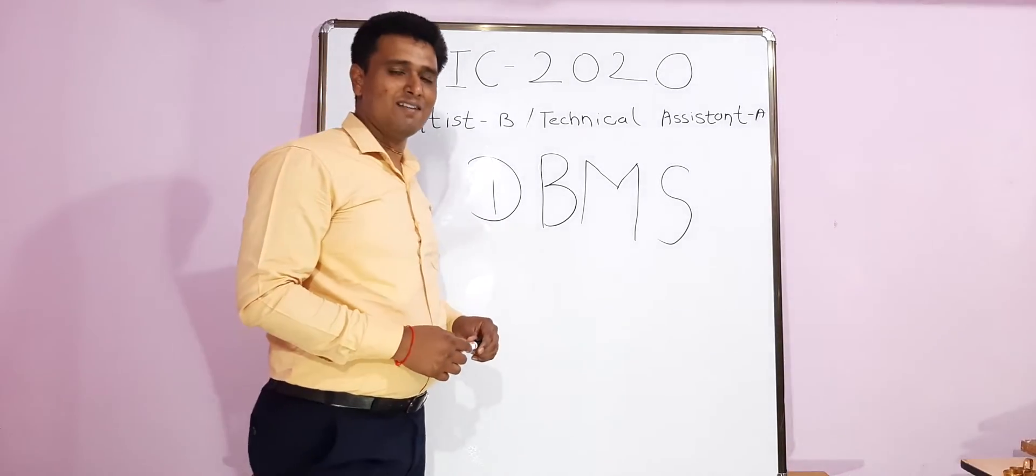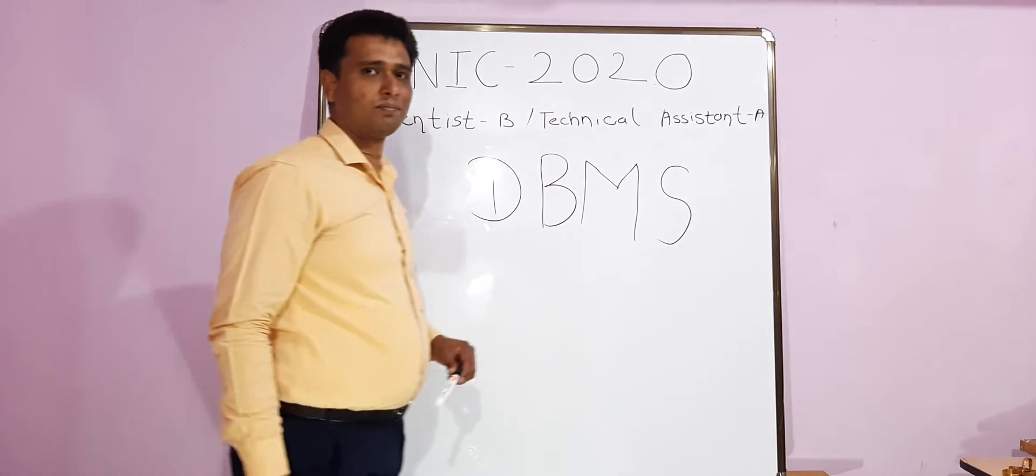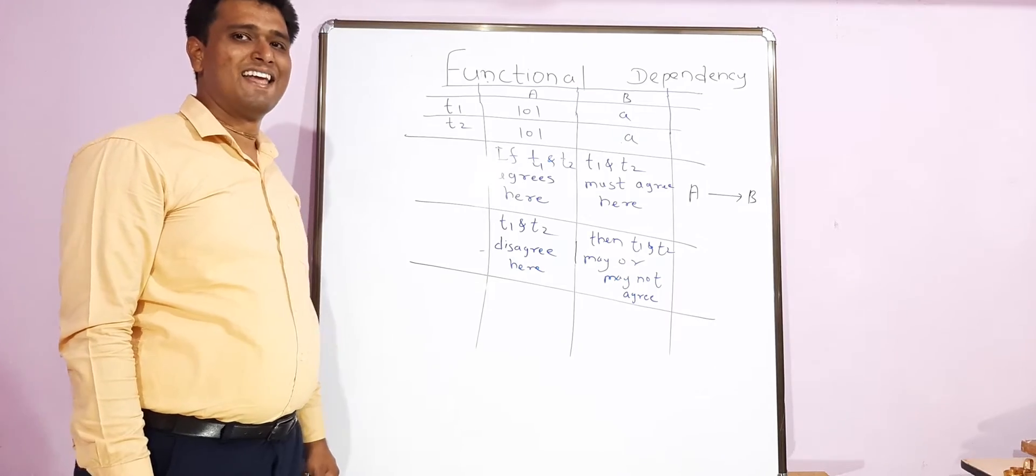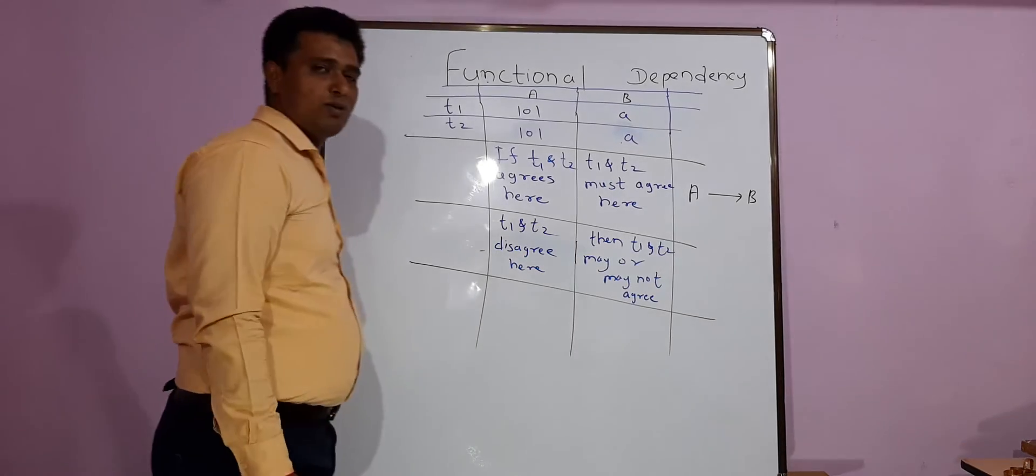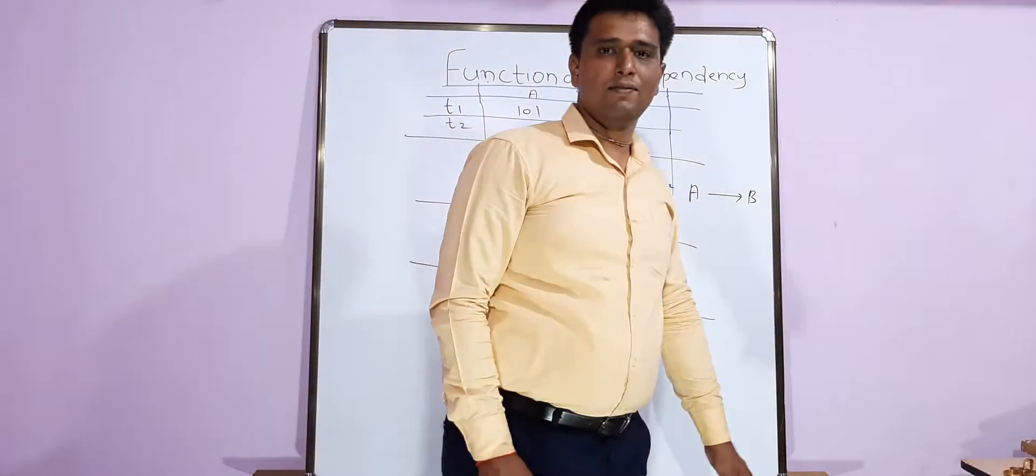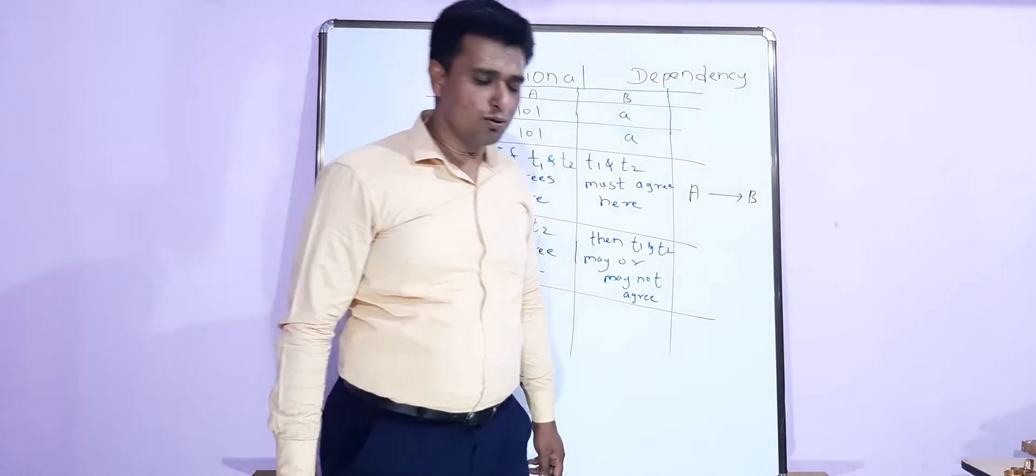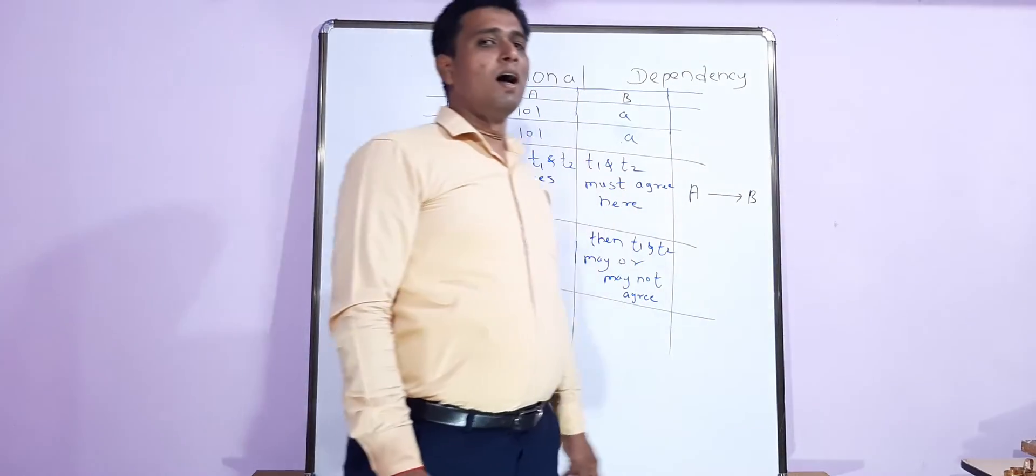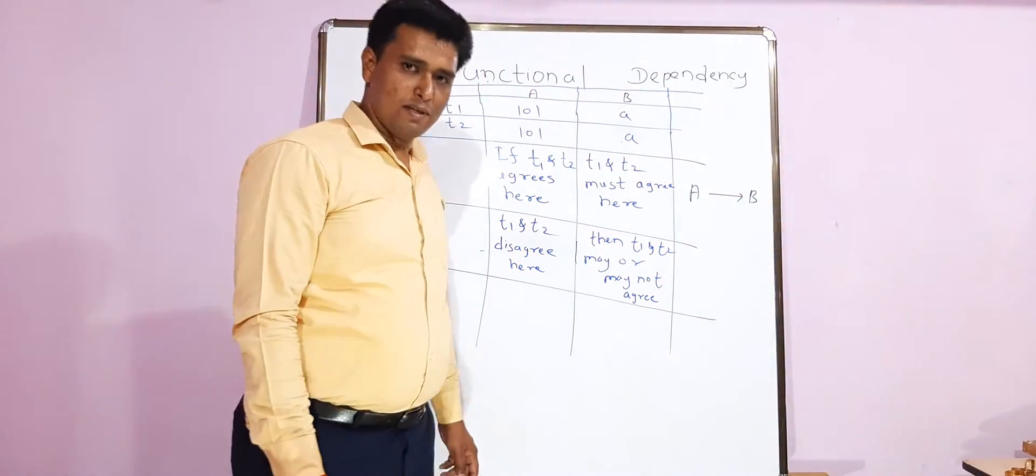So let's start with the basic concept. Now we are going to see the first basic topic, functional dependency, that is used in normalization 1NF, 2NF, 3NF, BCNF.